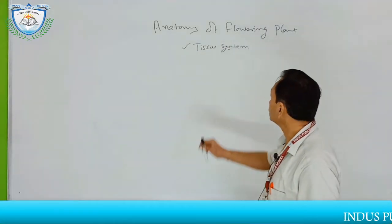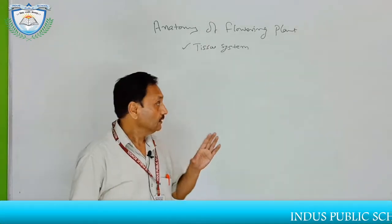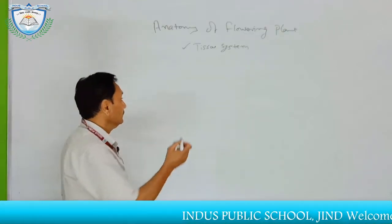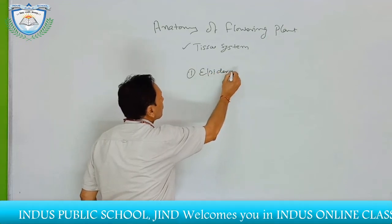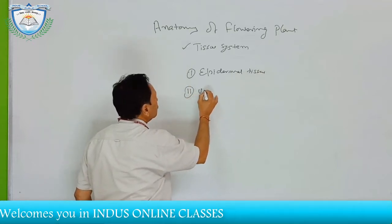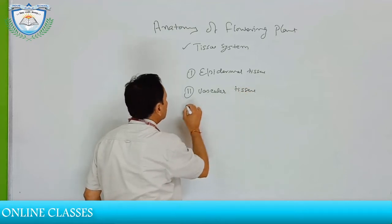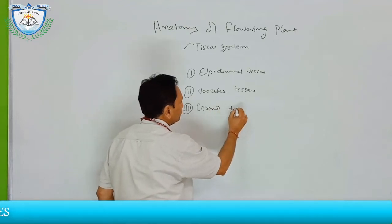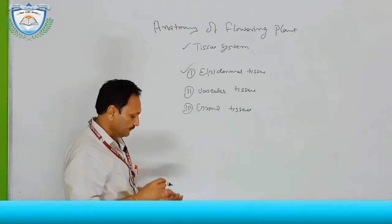Good morning students. Today we will discuss about the anatomical problem. This tissue system has epidermal tissue, vascular tissue, and ground tissue. Firstly, we will discuss about the epidermal tissue.